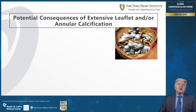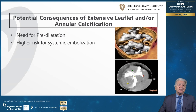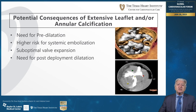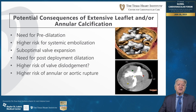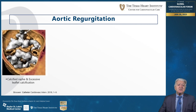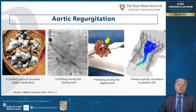The important potential consequences of extensive leaflet and/or raphe calcification include a greater need for predilatation, higher risk of systemic embolization, risk of suboptimal valve expansion, potential need for post-deployment dilatation, and higher risk of valve dislodgement or annular or aortic rupture. A calcified raphe and extensive leaflet calcification can also pose a significant risk of paravalvular leak, as shown in this simulation.